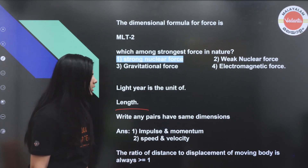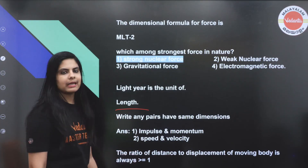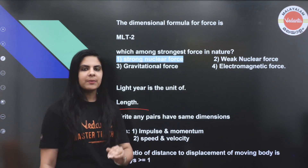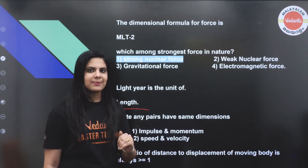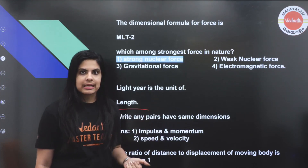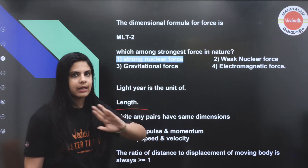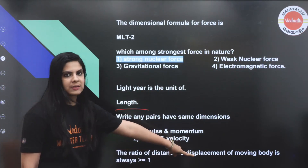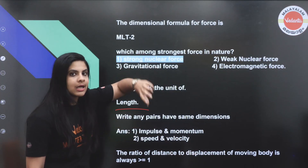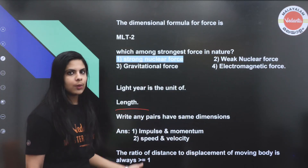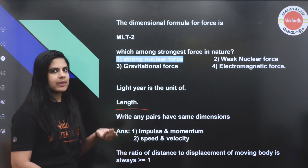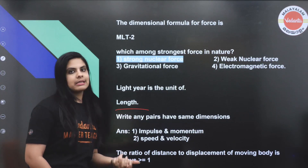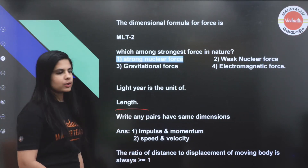The ratio of distance to displacement of a moving body is always greater than or equal to 1. Distance is always greater than or equal to displacement. So distance divided by displacement is always greater than or equal to 1, and equals 1 only when distance equals displacement.